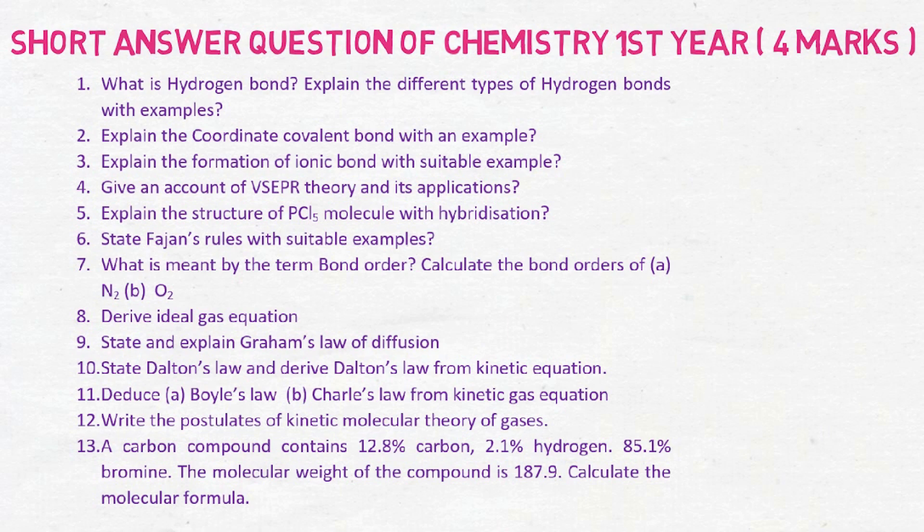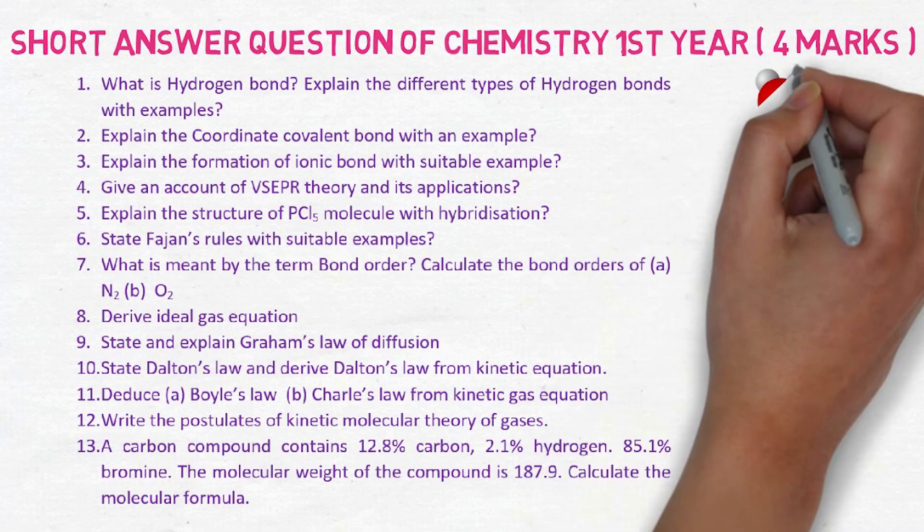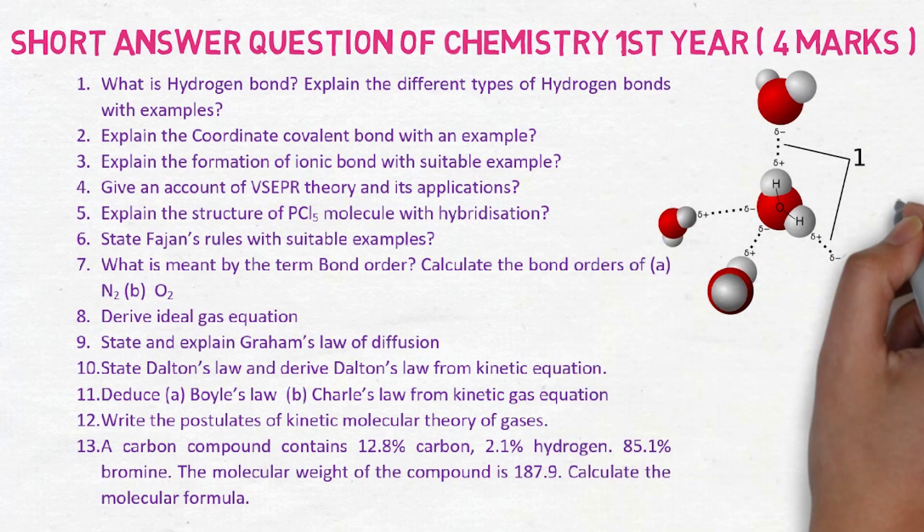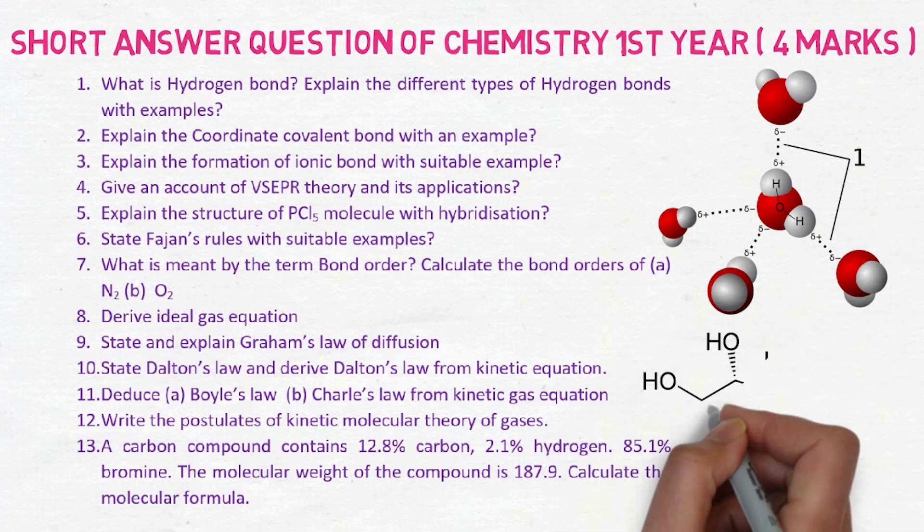Eighth is derive an ideal gas equation. Ninth is Graham's law of diffusion. Tenth is Dalton's law. Eleventh is deduce Boyle's law and Charles law. Twelfth is postulates of kinetic molecular theory of gases. Thirteenth, the very important SAQ of stoichiometry, the carbon containing compound. These are the numerical problems. This will give you maximum marks in your IP exam.